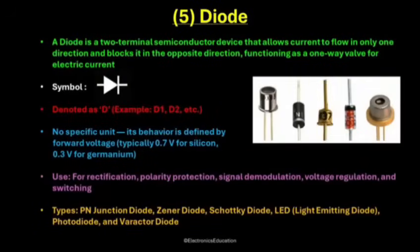Now let's talk about semiconductor devices in electronics, starting with the diode. A diode is a two-terminal semiconductor device that allows current to flow in only one direction and blocks it in the opposite direction. It acts like a one-way valve for electric current. This simple behavior makes it extremely useful for converting, protecting, and controlling electrical signals. When voltage is applied in the forward direction, the diode conducts electricity. But when the voltage is reversed, it blocks the flow completely. This property makes it ideal for rectification — converting alternating current, or AC, into direct current, or DC.